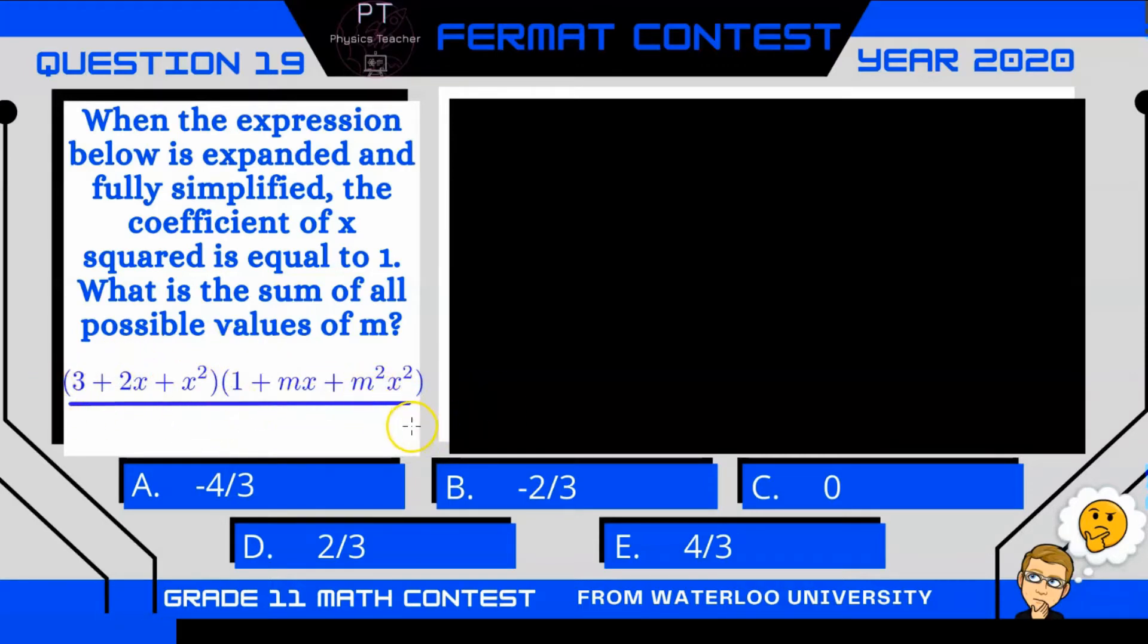It's going to get pretty big, so let's just focus on expanding the terms that are going to have an x squared in them. For example, 3 and 1 are not going to give us an x squared. 3 and mx are not going to give us an x squared. However, 3 and m squared x squared is. Let's write that one down. We have 3m squared x squared.